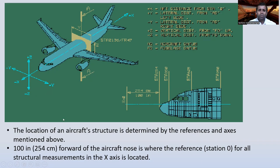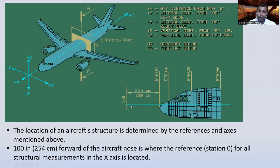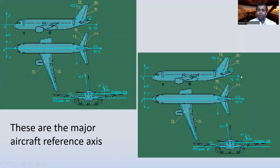The location of an aircraft structure is determined by the references and axes mentioned above. The reference station zero for all structural measurements in the X-axis is located 100 inches, or 254 centimeters, forward of the aircraft nose. Here you can see station zero — it is situated 254 centimeters forward of the nose. These are the major aircraft reference axes.